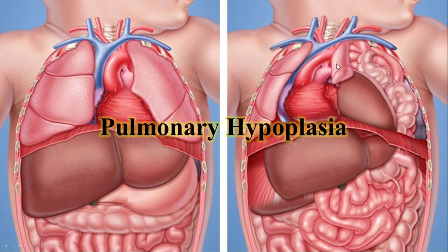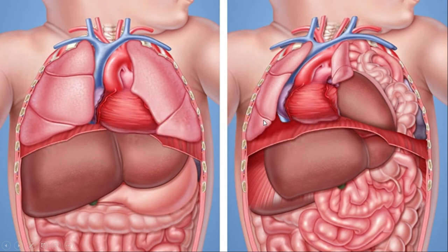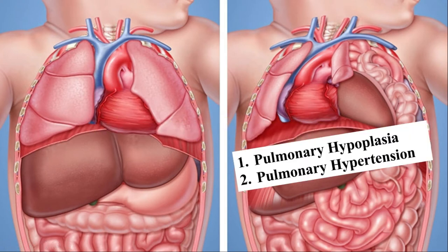This condition is known as pulmonary hypoplasia — meaning the lungs are underdeveloped and small in size. When the baby is born, he or she will face difficulty breathing due to these underdeveloped lungs. Also, as the lungs are compressed, vascular pressure inside the lung increases, which is known as pulmonary hypertension. These two conditions — pulmonary hypoplasia and pulmonary hypertension — are the major causes of death in CDH.